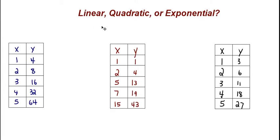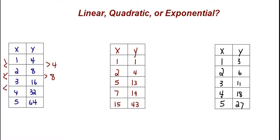Let's look at this first one. What I like to teach is to first look to see if it's linear. If it's linear, it's going to be a constant change in y for the same change in x. Here, we're changing x by one. From one to two, we get a change in y of four. If this was linear, going another one in x should give another four. But that's not the case — we get a change of eight. So we can automatically cross off linear.